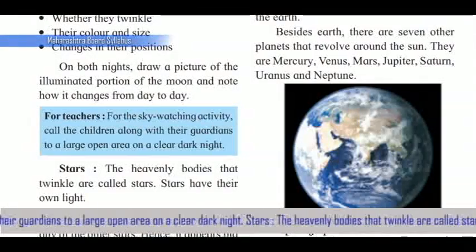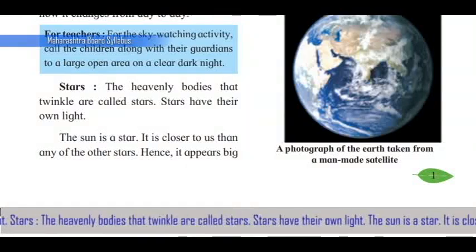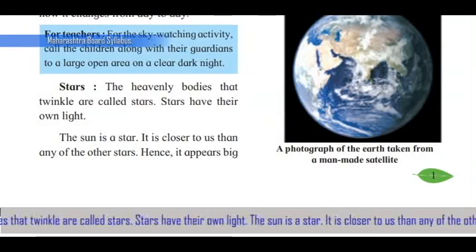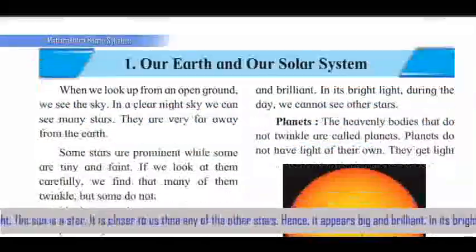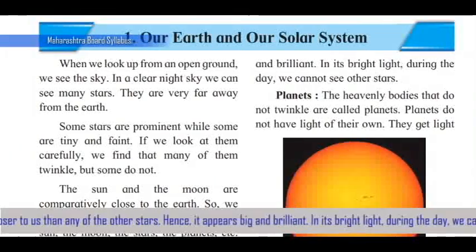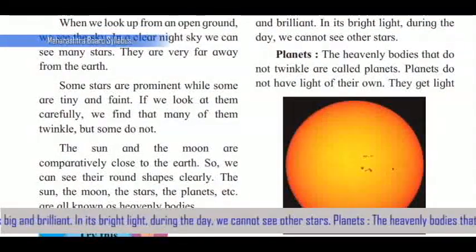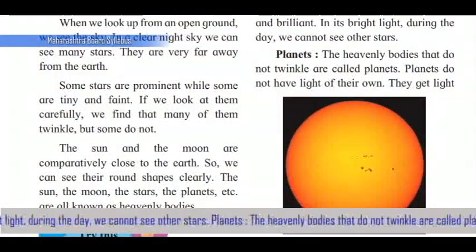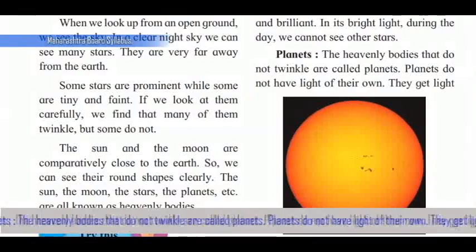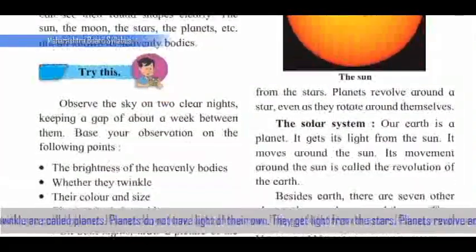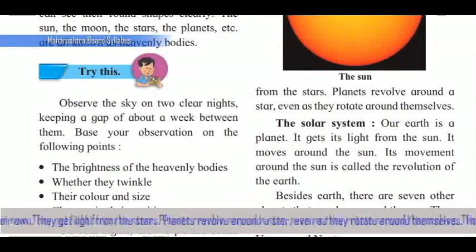Stars are the heavenly bodies that twinkle. Stars have their own light. The Sun is a star — it is closer to us than any of the other stars, hence it appears big and brilliant. In its bright light during the day, we cannot see other stars. Planets are heavenly bodies that do not twinkle. Planets do not have light of their own; they get their light from the stars.